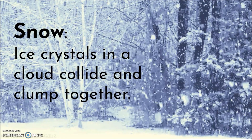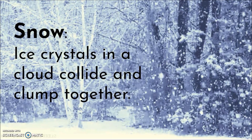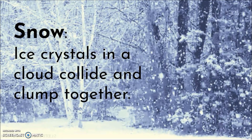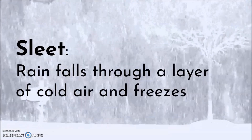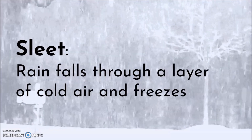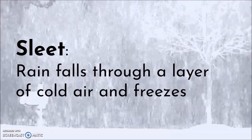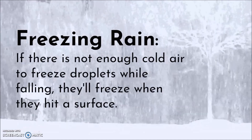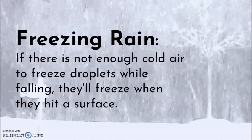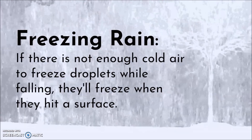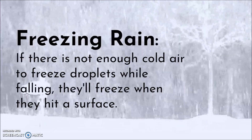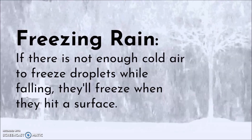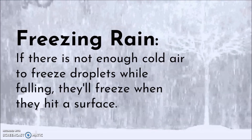Temperature in clouds is usually freezing, forming ice crystals. Snow is when ice crystals in a cloud collide and clump together. Sometimes rain falls through a layer of cold air and freezes, creating sleet. If there is not enough cold air to freeze while falling, the drops will freeze when they hit a surface — called freezing rain. This can cause sheets of ice and, if heavy enough, can break trees and power lines.